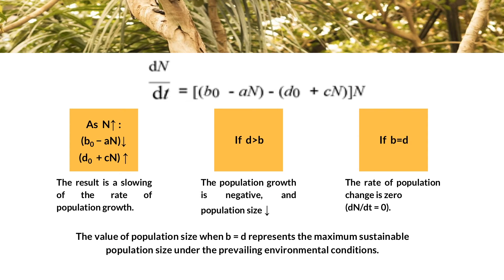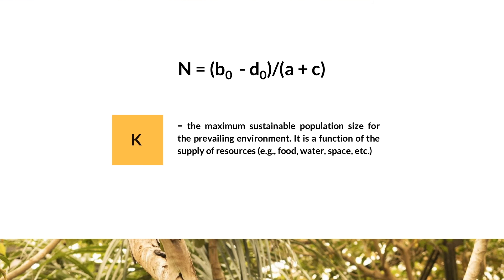We can now rewrite the exponential model of population growth to include the variations in the rates of birth and death as a function of population size presented previously. As N increases, the birth rate declines and the death rate increases; the result is a slowing of the rate of population growth. If the value of D exceeds that of B, the population growth is negative and the population size declines. When the birth rate B is equal to the death rate D, the rate of population change is zero. We can solve for this value by setting the equation for population growth equal to zero and solving for N. The result is N equals the ideal birth rate minus the ideal death rate over the sum of their slopes, which is A plus C.